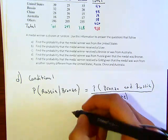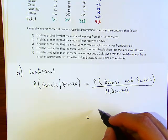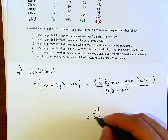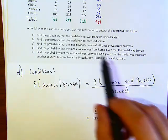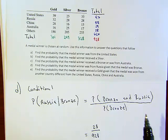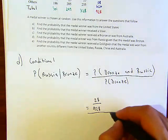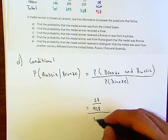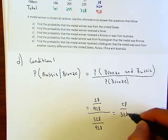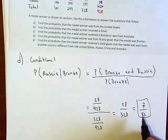The probability on the top equals 28 over 928, because 28 people from Russia received the bronze. The probability of bronze was 328 over 928. This simplifies to 28 over 328, which equals 7 over 82 when you simplify the fraction.